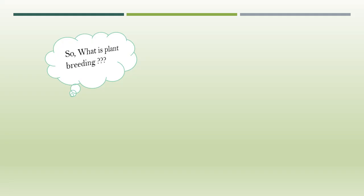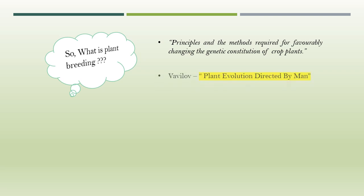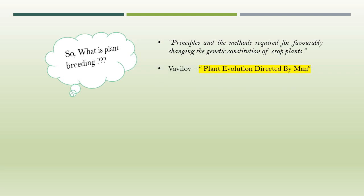So what is plant breeding? It can be defined as the principles and methods required for favorably changing the genetic constitution of crop plants for the benefit of human beings. According to Vaviloff, it is the plant evolution directed by man.